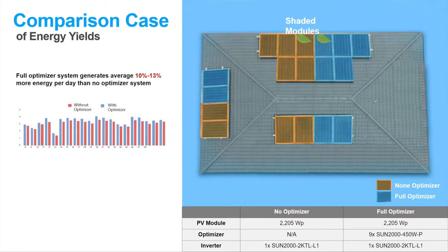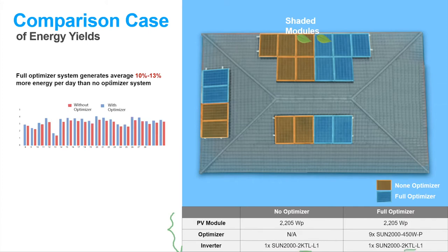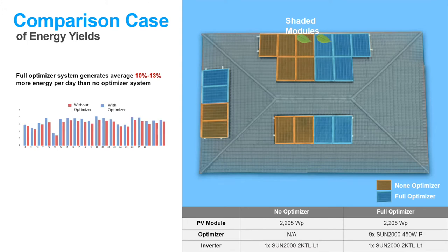A comparison was made between a system with optimizers (blue) and one without optimizers (orange), with the PV module shaded, in the same location. A 2 kW single-phase inverter was used. A comparison was made over a month, and it was seen that the system with full optimizers had 10 to 13% more production. They help with production because you have clouds and all sorts of different conditions, and over the long term this makes a difference.